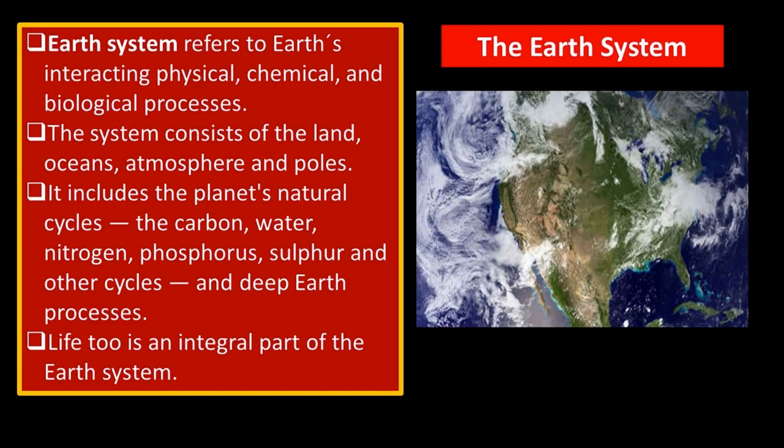Let us study the Earth's system. The term Earth System refers to Earth's interacting physical, chemical, and biological processes. The system consists of the land, oceans, atmosphere and poles. It includes the planet's natural cycles — the carbon, water, nitrogen, phosphorus, sulfur and other cycles — and deep Earth processes.